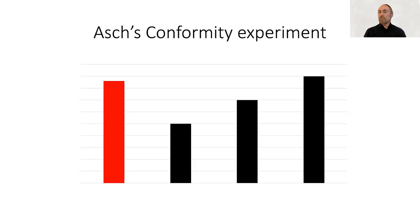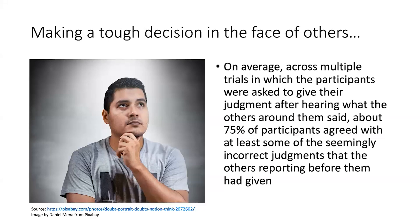You might say you're going to stick by your guns and pick the same correct line you'd pick when alone. But it turns out that if you're with other people, they can very much sway your judgment. In Asch's research, what he found was that across multiple trials, about 75% of participants agreed with at least some of the seemingly incorrect judgments that the others had given. You're not an automaton — if you see others giving incorrect responses, that doesn't mean you automatically always agree — but there will be times when their response, even though it seems incorrect, might lead you to agree with them as well.